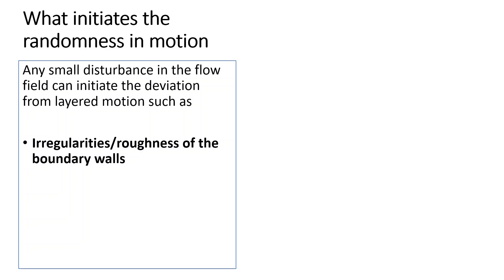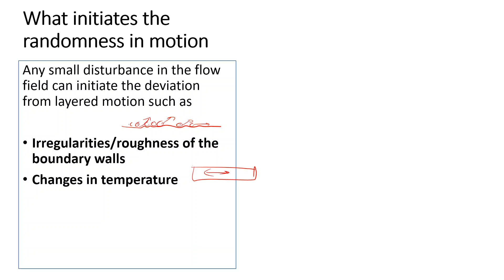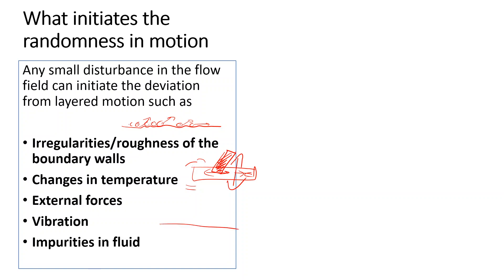Those disturbances can come from irregularities or roughness of the boundary walls — if the boundary wall is not smooth, one layer will break and that will break adjacent layers until the whole flow becomes turbulent. Changes in temperature — hot parts expanding and cold parts condensing — also cause disturbances. External forces such as vibrations, objects inserted into the flow, and impurities in the fluid can also initiate turbulence.